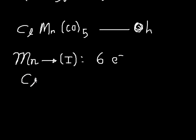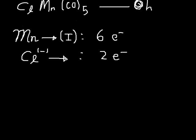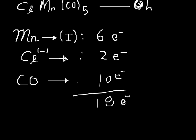And then we have a chlorine. So you're going to see that counts as two. And finally, we have five carbonyls, each counting as two. So that will give us 10. And really quickly, we have 18 electrons. So this compound does obey the 18 electron rule.